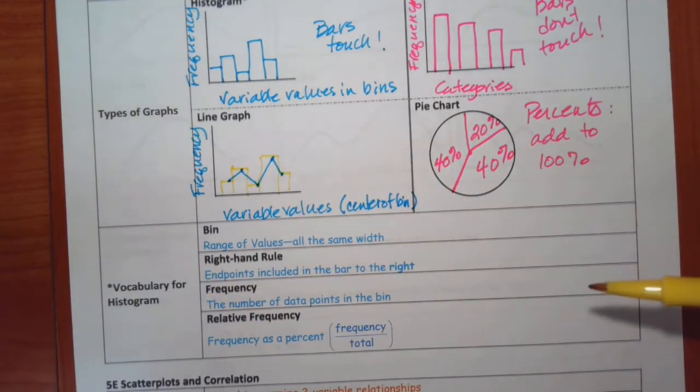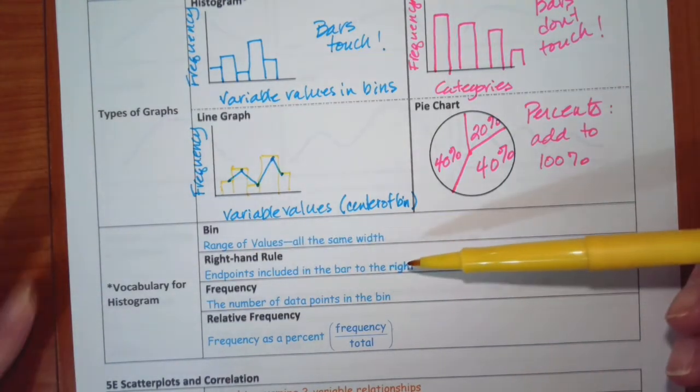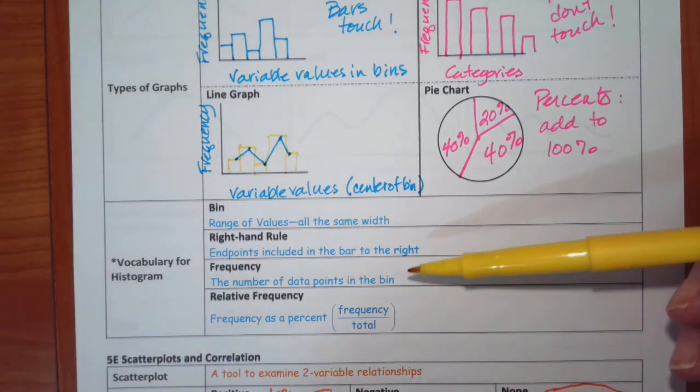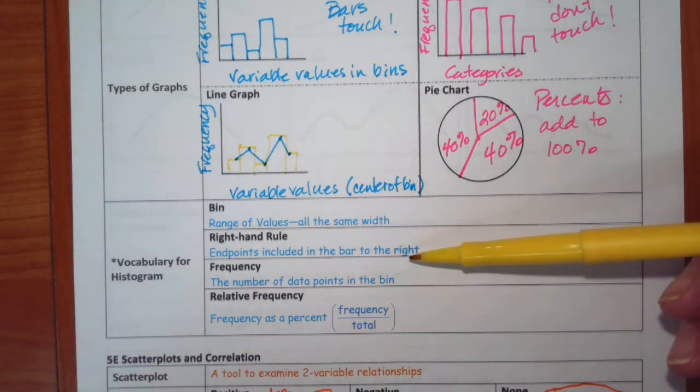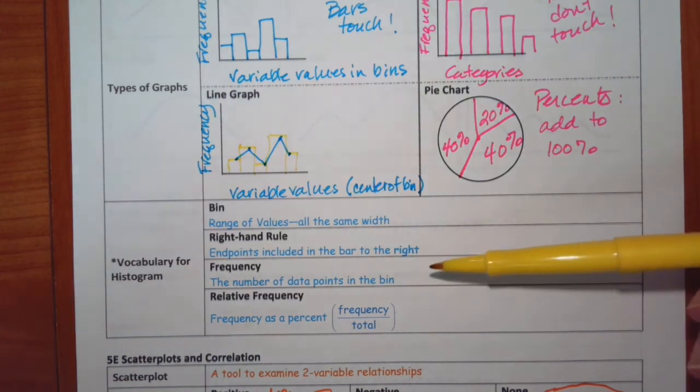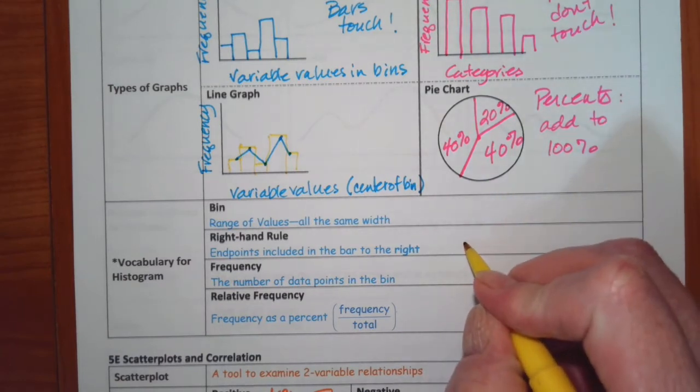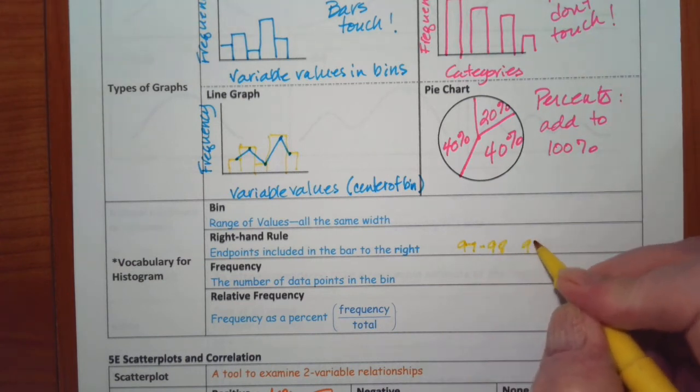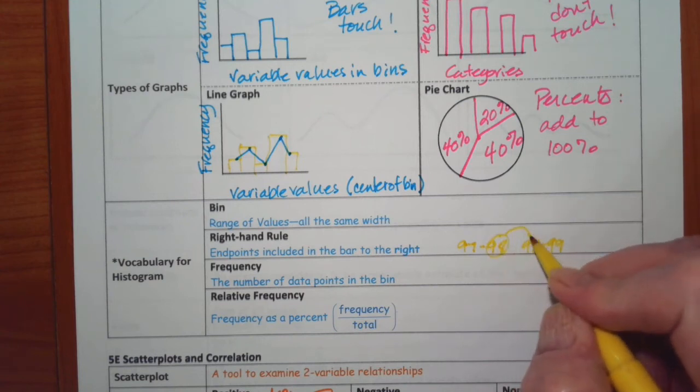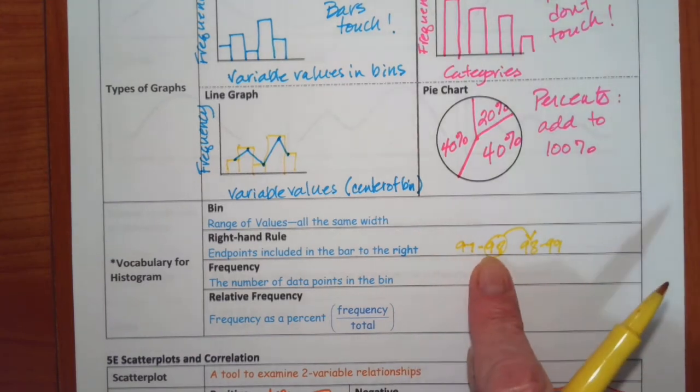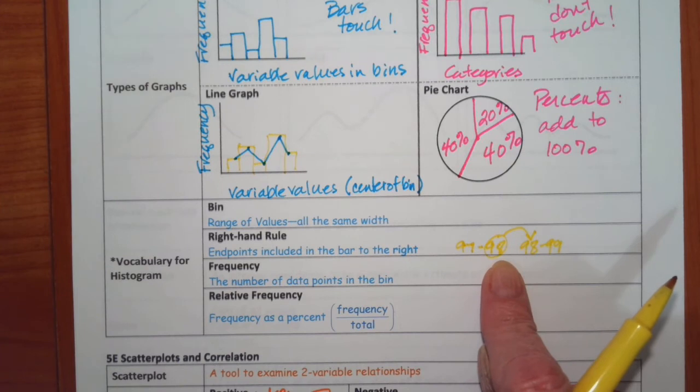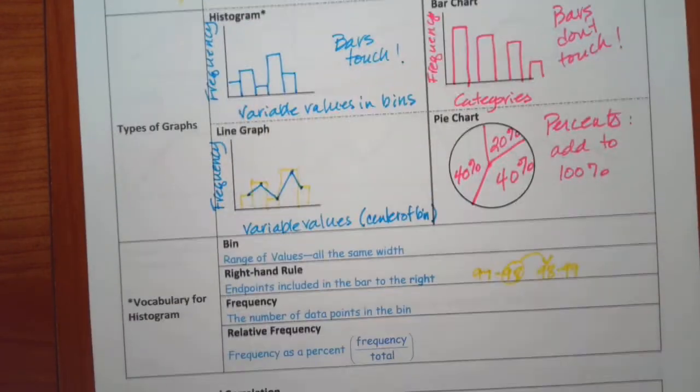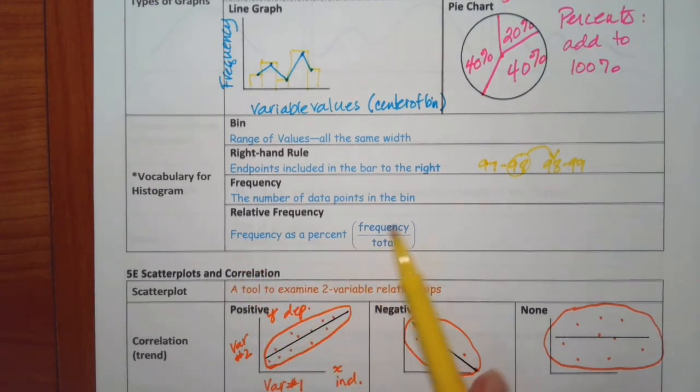There is some vocabulary for the histogram. The bin is the range of values, all the same width. Again, if you were dealing with temperature, you would, if you wanted to go up in degree increments, that would be fine, or half a degree, however many you're pulling, or whatever data you want. The right-hand rule means that the endpoint is included in the bar to the right. So for example, if you were dealing with temperatures and you did 97 to 98, and then 98 to 99, 98 would go in this bin. This would be 97 to 97.9999999. Anything that's 98 would go into the next bin. The frequency is the number of data points in the bin. That, of course, goes for a bar chart as well. And then the relative frequency is the frequency as a percent, which means frequency over total.